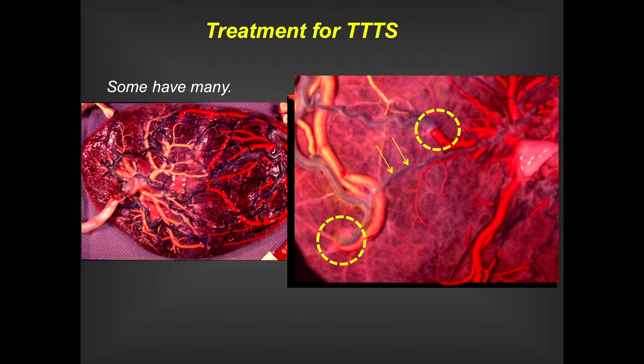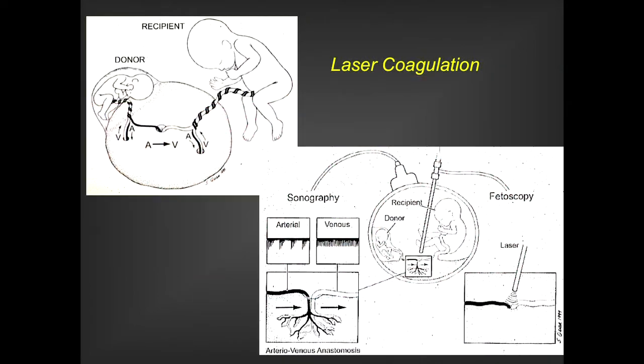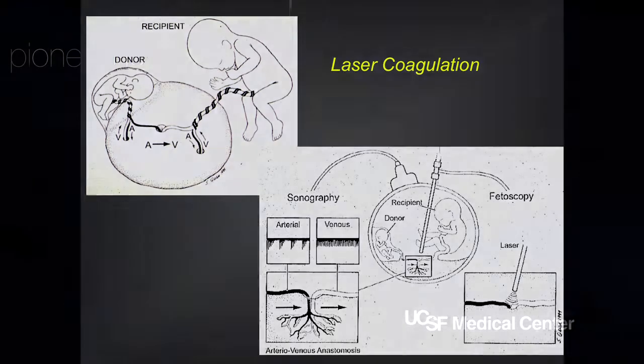The interesting thing about learning about all these vessels in the placenta is that you can actually see this through the fetoscope. That is what has led us to think about possibly dichorionizing a placenta based on laser ablation of those communications through a fetoscope. I'll let Han Min talk to you about what we actually see during the surgery.